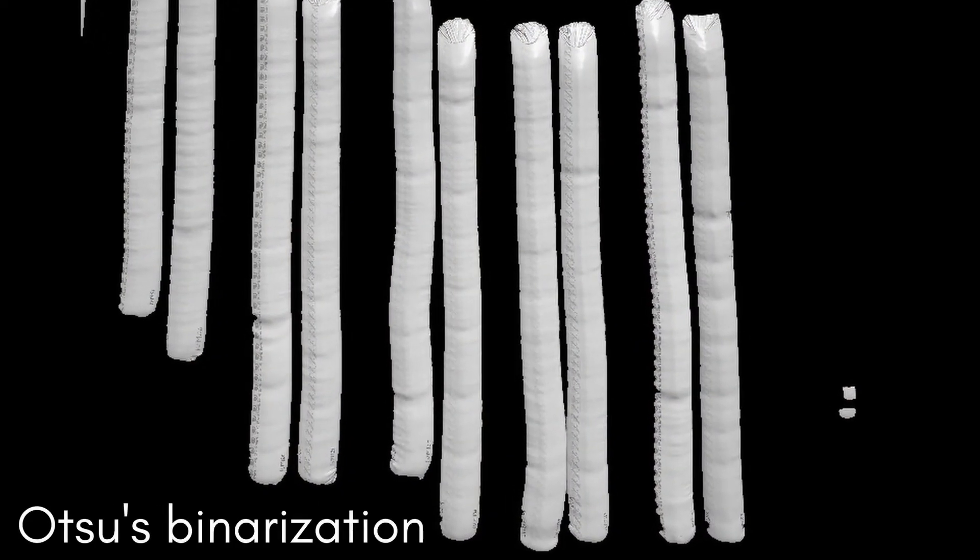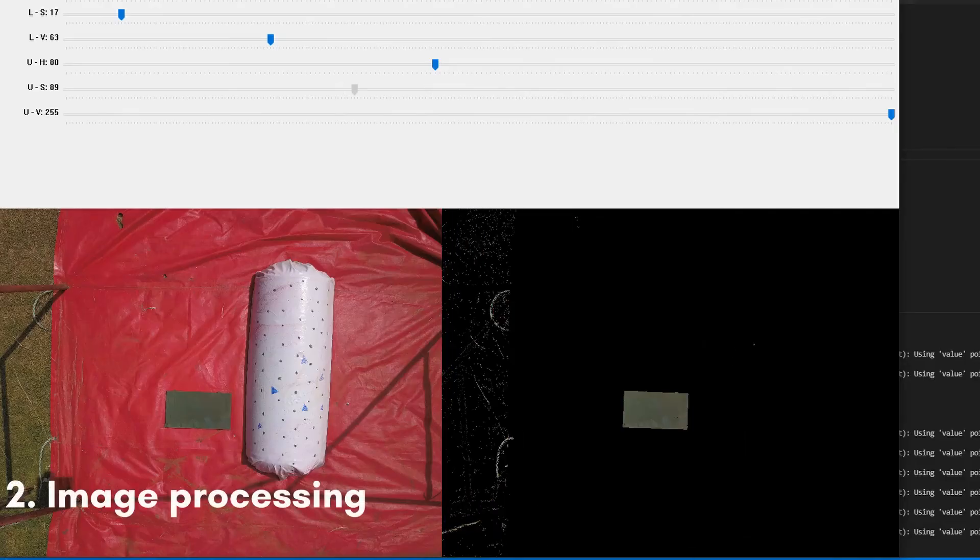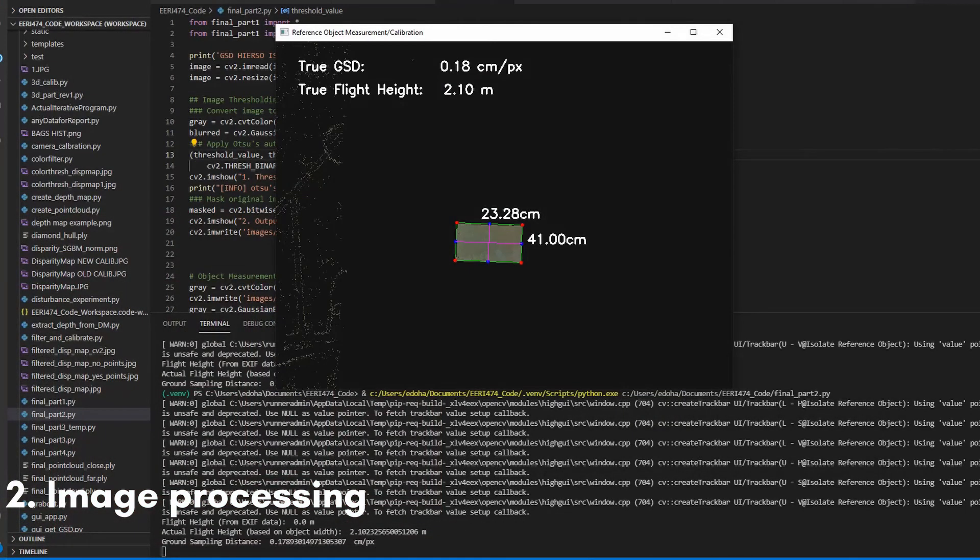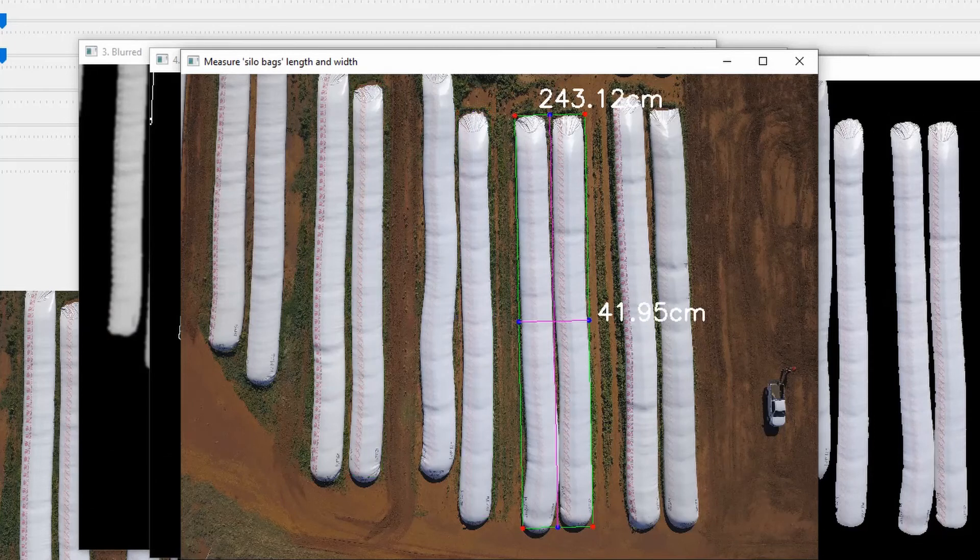Then, image processing takes place. Brightness corrections and image segmentation isolate the silo bags from the rest of the image. And with the help of a colorful reference object, the length and width of the silo bags are measured at an accuracy of above 95%.